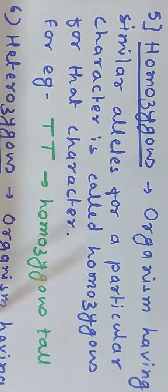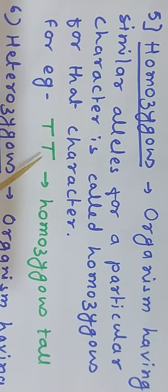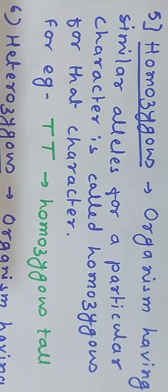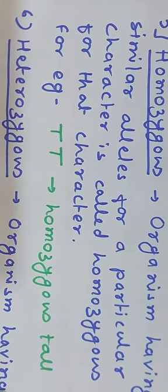An organism having similar alleles for a particular character is called homozygous for that character. For example, a tall-heighted plant with genotype capital T capital T is homozygous for tall height, and a dwarf-heighted plant with genotype small t small t is also homozygous, because both alleles for that character are similar — either both dominant or both recessive.